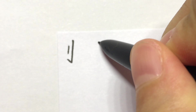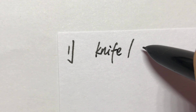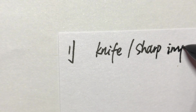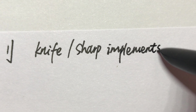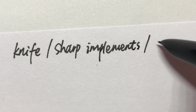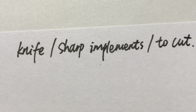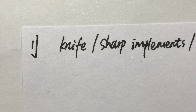Characters with 利刀旁 are knife, sharp implements, or cut related. This radical is really on the right side of a character.